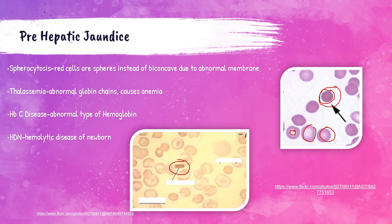Hemolytic disease of the newborn occurs when the blood types of the newborn and the mother are incompatible. The mother's antibodies attack the antigens on the baby's red blood cells, causing them to lyse. All of these disorders can be causes of prehepatic jaundice and will be discussed in more detail in hematology. Hemolytic disease of the newborn will also be covered extensively in immunohematology or blood banking courses.